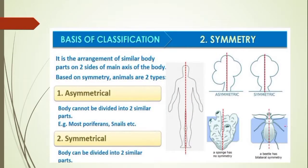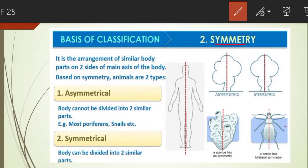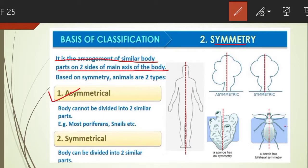Moving to the second basis of classification, that is symmetry. Symmetry refers to the arrangement of similar body parts on two sides of the main axis of the body. On the basis of symmetry, animals can be of two types: asymmetrical and symmetrical. Animals in which any plane passing through the center does not divide them into two equal halves are called asymmetrical.